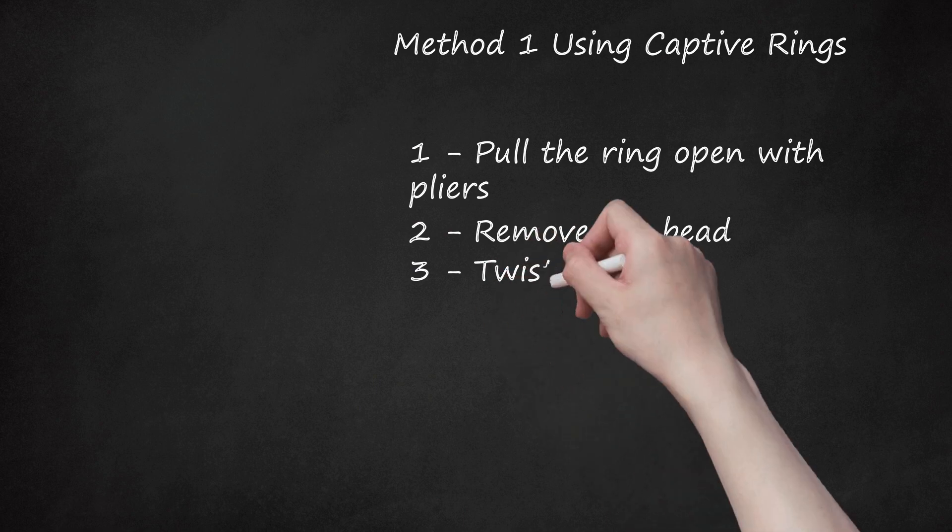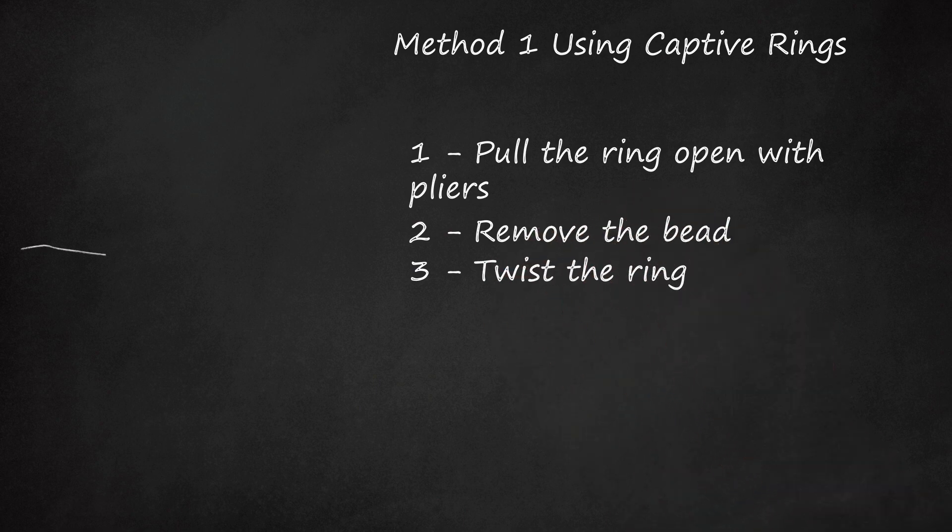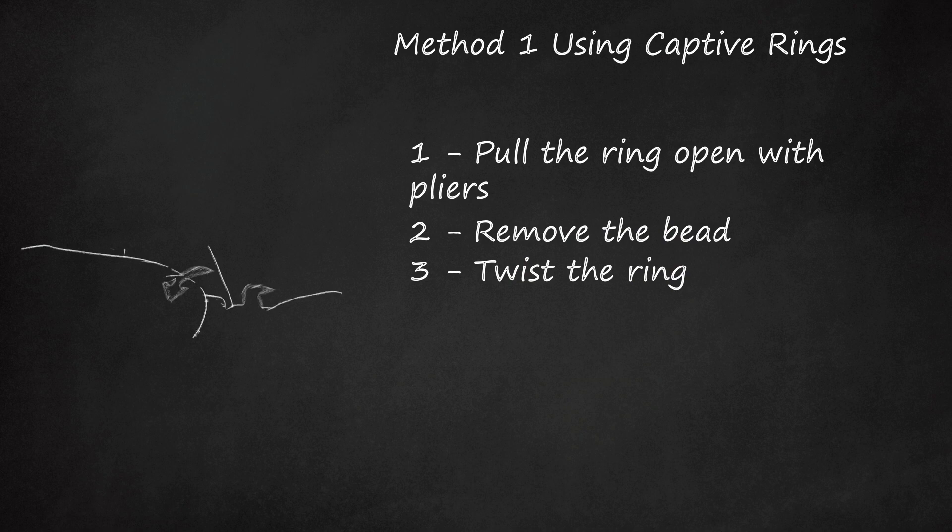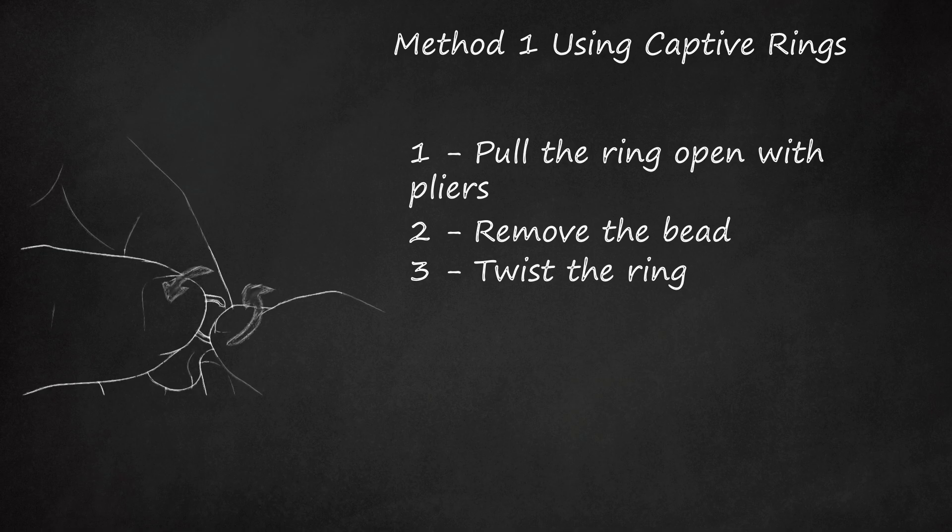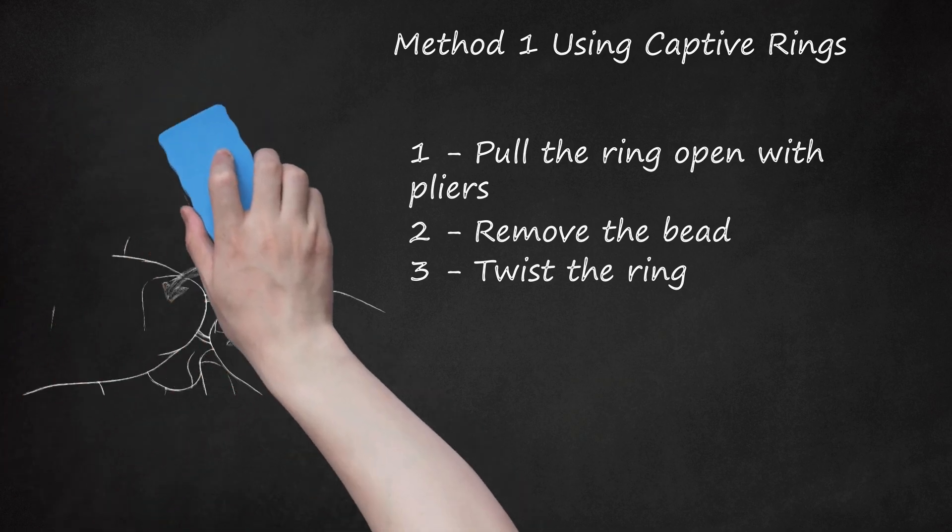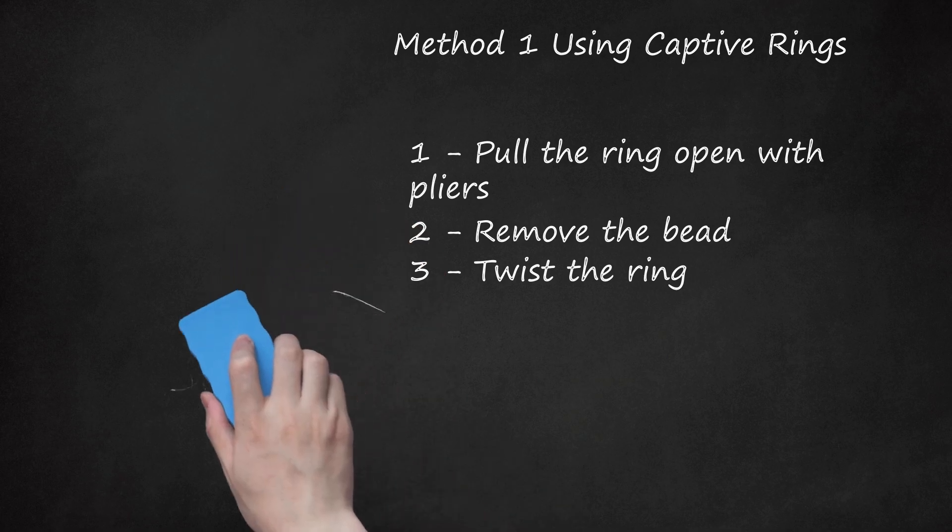Step 3 - Twist the ring. After you remove the bead, twist the ring into a semi-spiral shape so you can easily fit it into your piercing. Turn one end clockwise and the other counterclockwise, but do this as little as needed. If you twist the ring ends too far apart, you might have difficulty twisting them back together again.